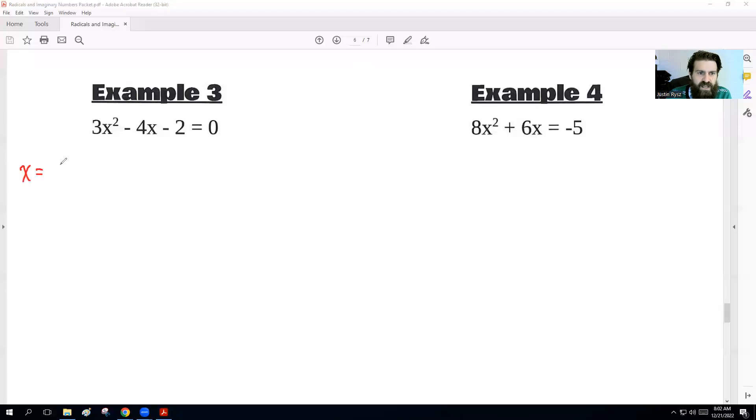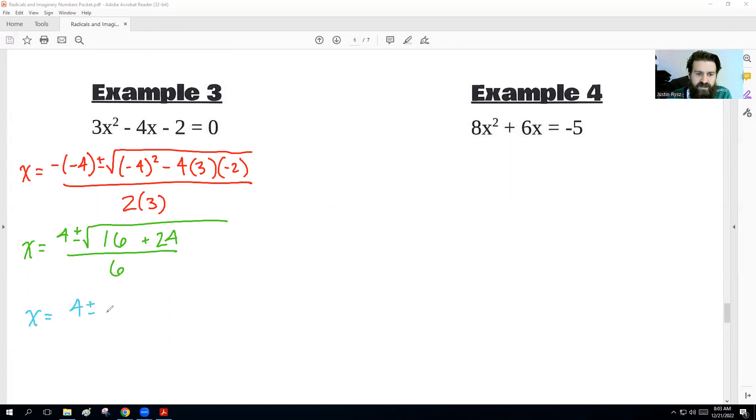Okay. We got x equals negative, b is negative 4, plus or minus the square root of b squared, or negative 4 squared in this case, minus 4 times a, which is 3, times c is negative 2, all over 2, times a is 3. All right. So let's multiply here. Negative times negative 4 is a positive 4. Plus or minus the square root of negative 4 squared is positive 16. Negative 4 times 3 is negative 12. Negative 12 times negative 2 is a positive 24. And then 2 times 3 is 6.